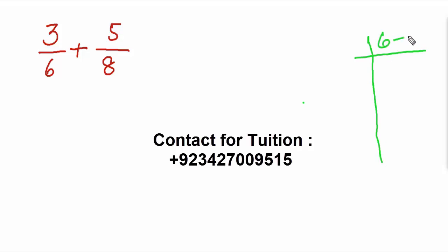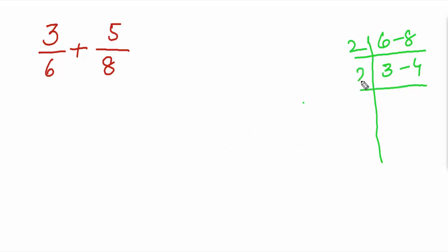numbers 6 and 8. 2 into 6 is 3, 2 into 8 is 4, again 3 as it is, 2 into 2 is 1, again